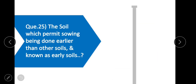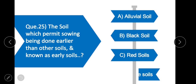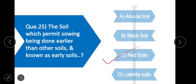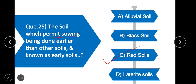Question 25: The soil which permits sowing being done earlier than other soils and is known as early soil — option C is correct — red soil. Red soil permits sowing earlier than other soils and is also known as early soil.